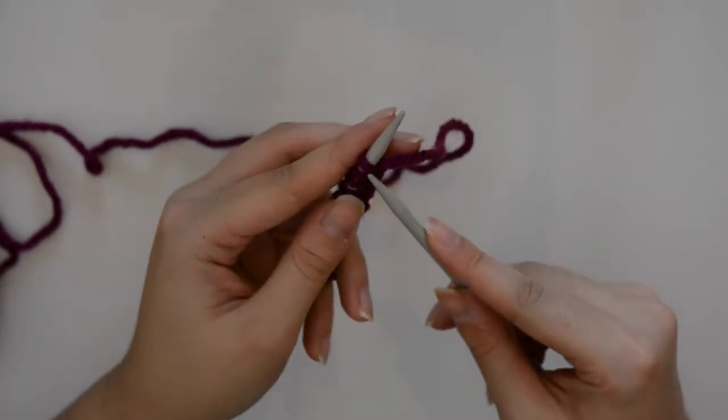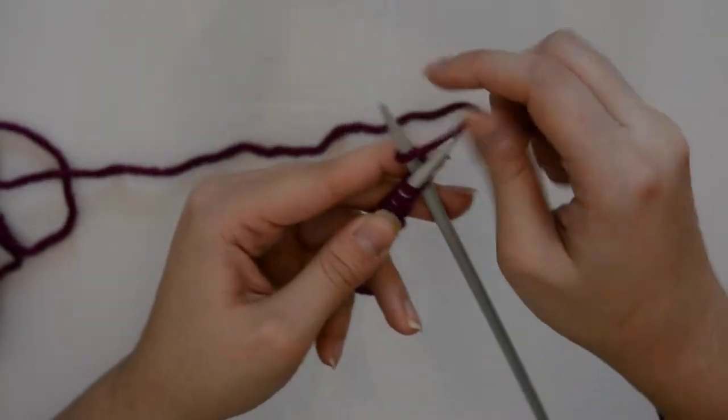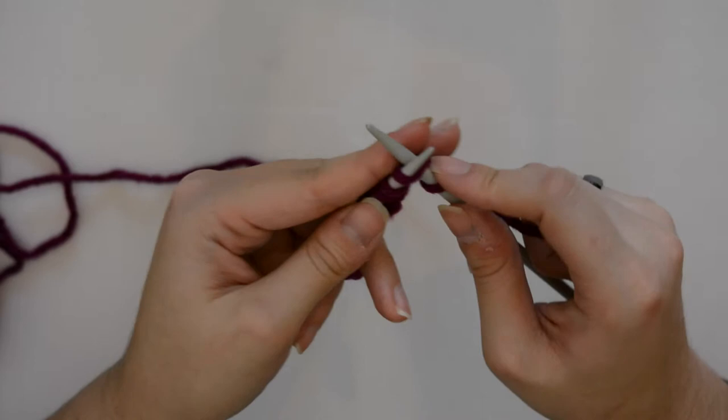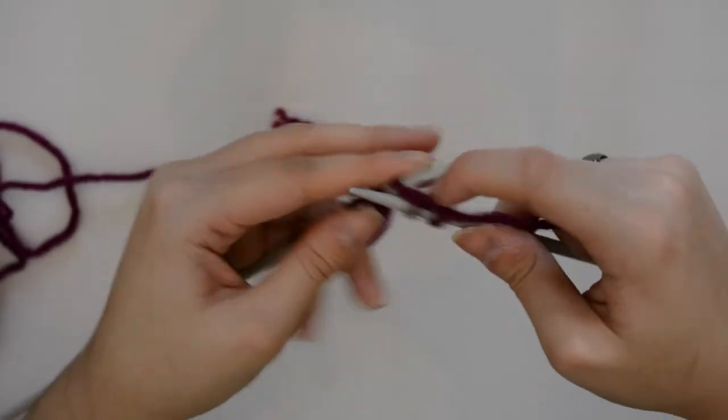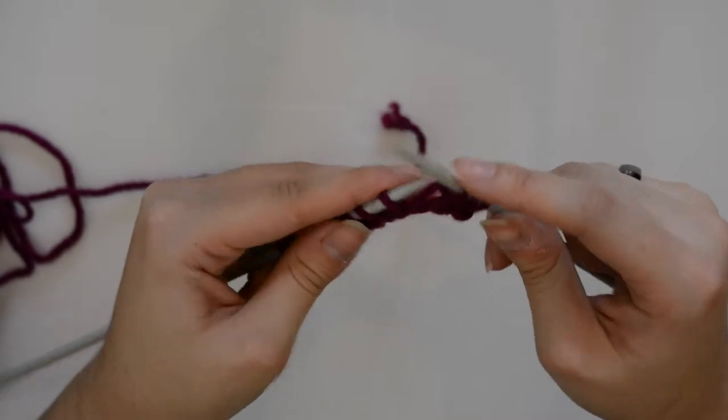For the first row, you're going to knit all stitches. I've just cast on just a random number of stitches to demonstrate this today.